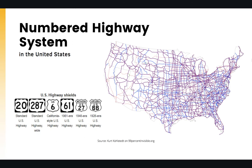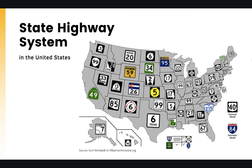At the next level after the interstate highway, we have the U.S. Highway System, also referred to as the numbered highway system. As you can see on the map, the density of these highways covers a much larger area than the interstate system. Each state also has its own specific highway shields, as well as other historical shields for different areas. States have their own designated highway systems with state-specific shields, and you can see examples here.